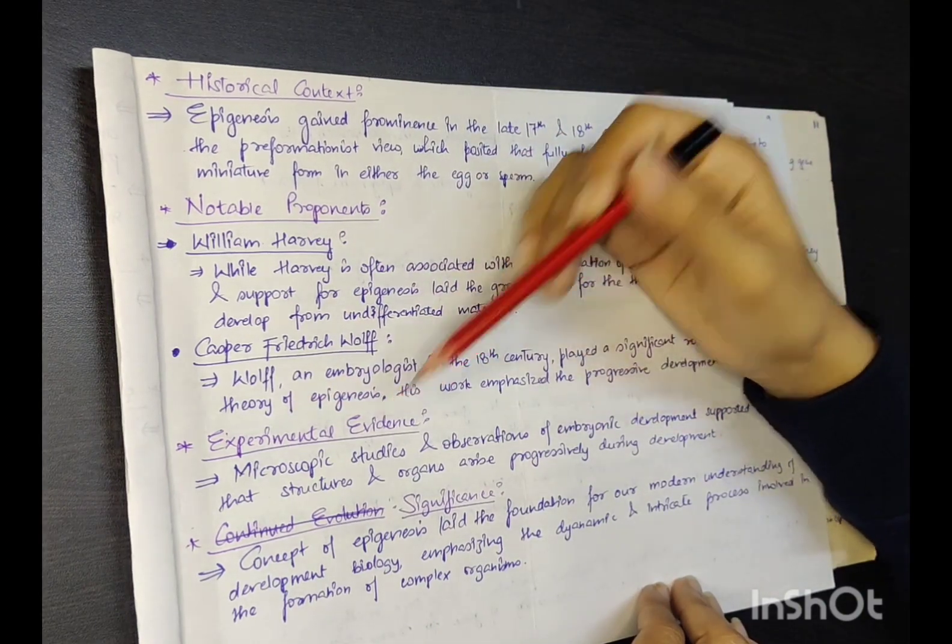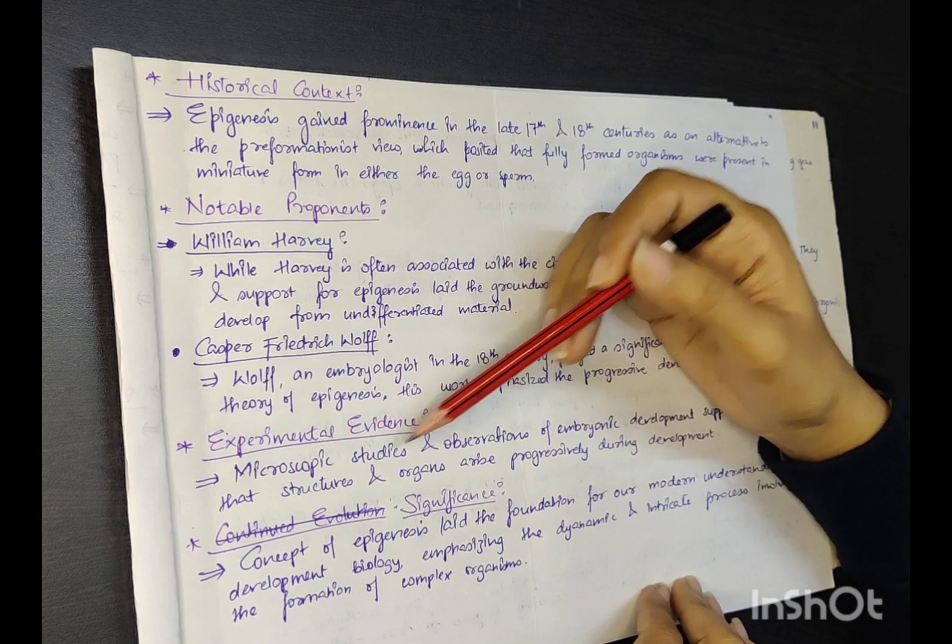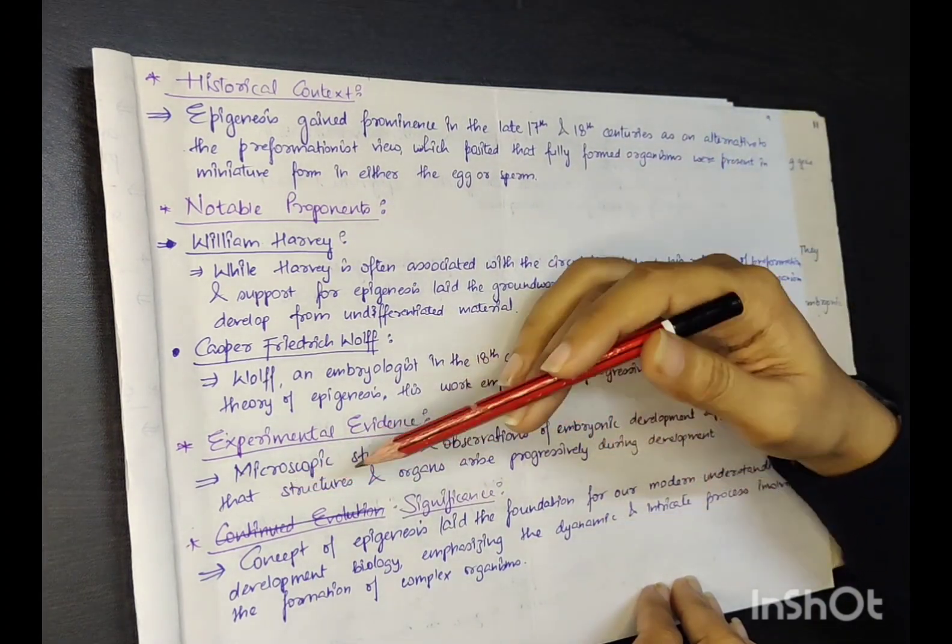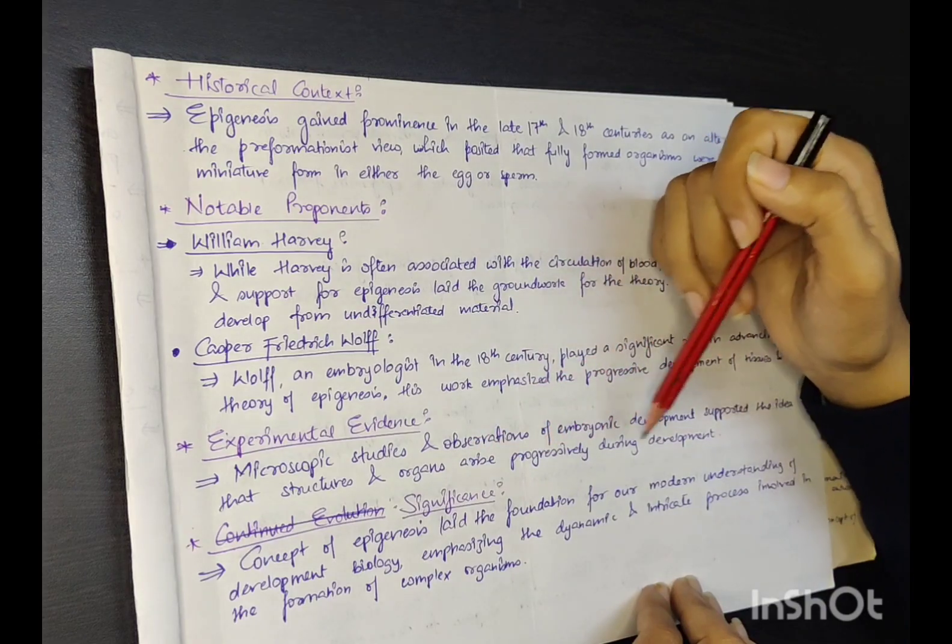Experimental evidence: Microscopic studies and observations of embryonic development supported the idea that structures and organs arise progressively during development.